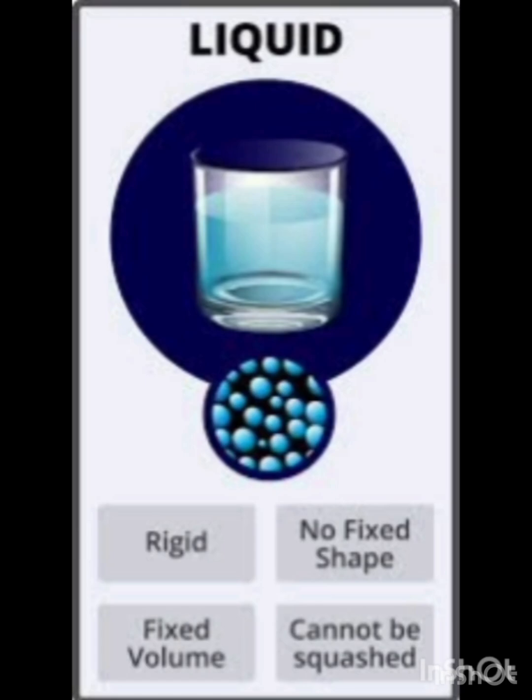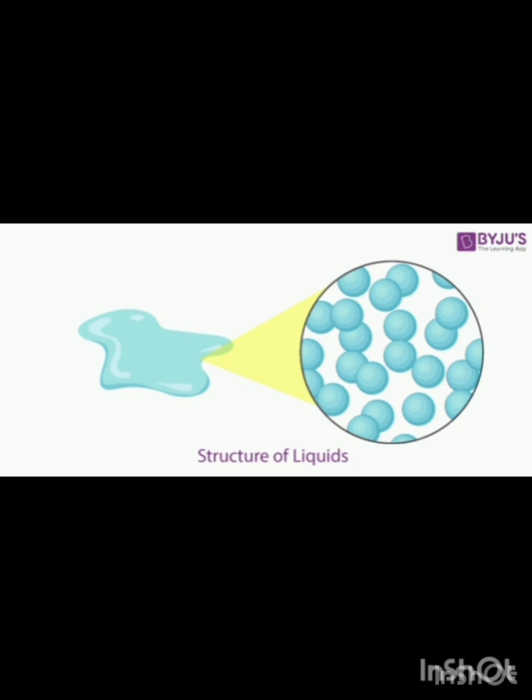The last state is gas. Gas refers to the state where particles are widely dispersed, move randomly, and have no fixed shape or volume, filling any container they are in. Properties of gas: they don't have a definite shape or volume, particles are very spread out and always in motion, and there are no strong attractive forces between particles.